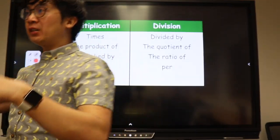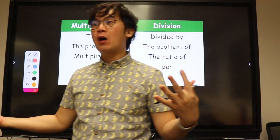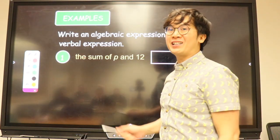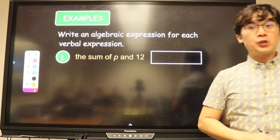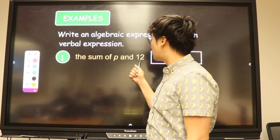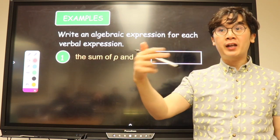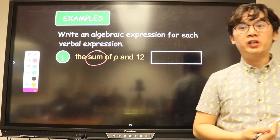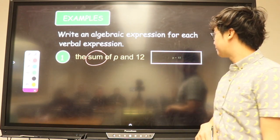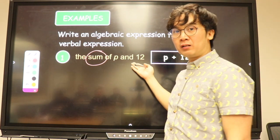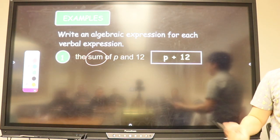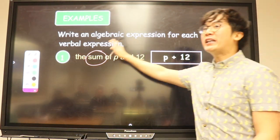What we're going to be doing first is translating a verbal phrase to a mathematical expression and vice versa. Let's say we need to write an algebraic expression for the verbal expression: 'the sum of p and 12.' What operation are we using — plus, minus, multiply, or divide? It's plus, because the word 'sum' is in the problem. So we translate it as p plus 12. From a verbal expression, you can now write it as a mathematical expression.